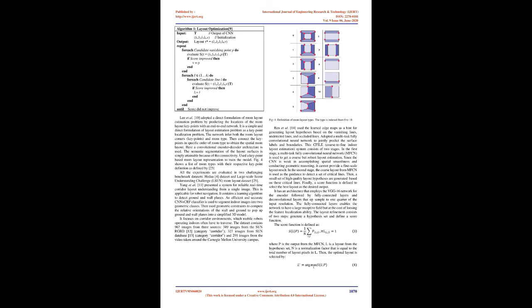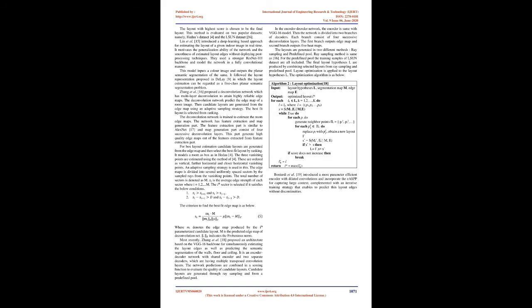Yang et al. presented a system for reliable real-time corridor layout understanding from a single image, applicable for robot navigation. It contains a learning algorithm to detect ground and wall planes, using an efficient and accurate CNN and CRF classifier to segment indoor images into two geometric classes. Then geometric constraints are used to compute relative orientations of the wall and ground to pop up ground and wall planes into a simplified 3D model. It focuses on corridor environments which mobile robots operating indoors often have to traverse. The dataset contains 967 images from three sources.